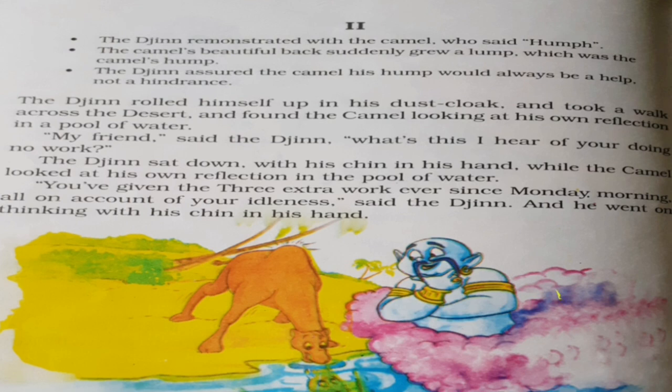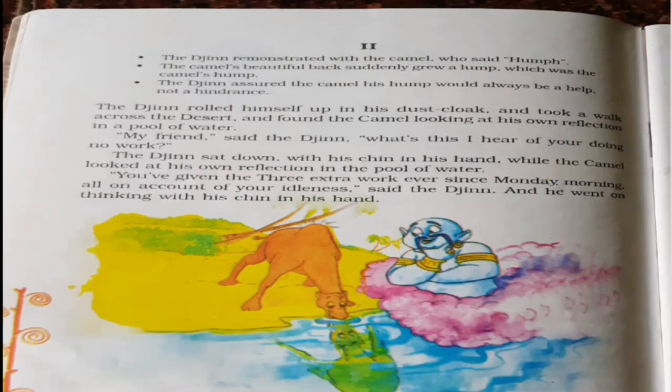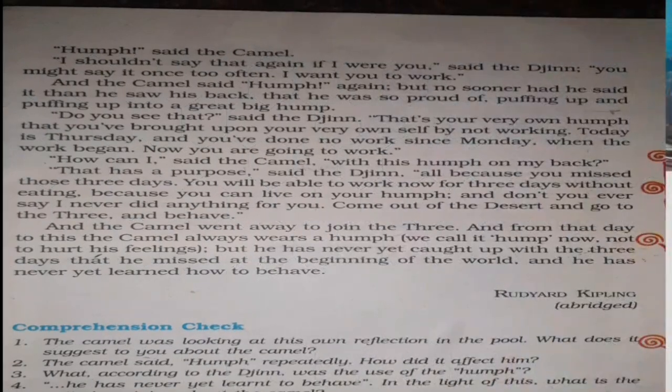When Jin asked the first question — that he had heard the camel was not doing any work — the camel did not reply. Jin continued saying that the camel had been sitting lazily and not doing any work since Monday, that work had been assigned to him but because of his laziness he was not doing his duty. He kept talking to the camel, but the camel's reply was, as usual, just one word: 'Hump.'